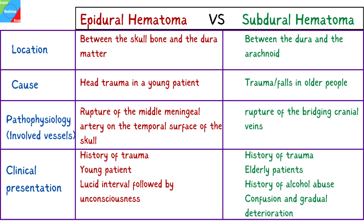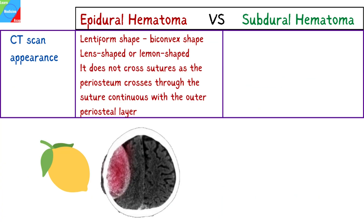For subdural hematoma, there will also be a history of trauma. It occurs more frequently in elderly patients due to reduced brain volume and stretched bridging veins. There is often a history of alcohol abuse. The patient's level of consciousness gradually decreases with increasing mass effect and confusion. In young children, non-accidental injury is a significant cause.